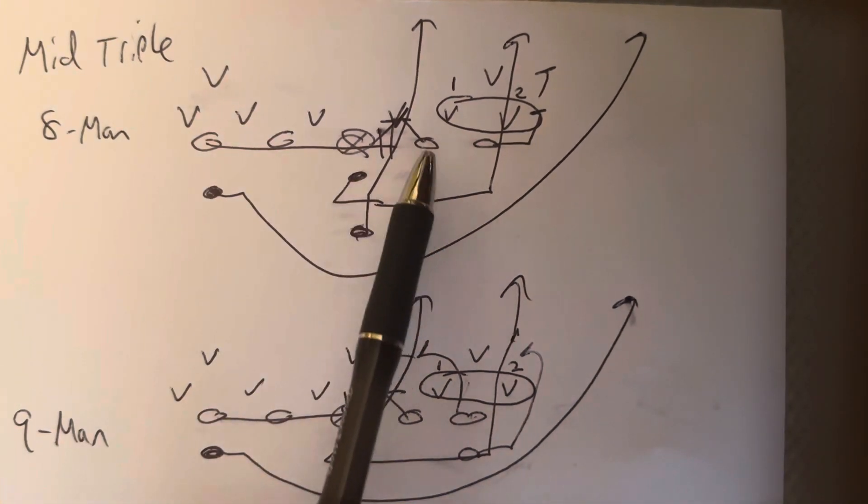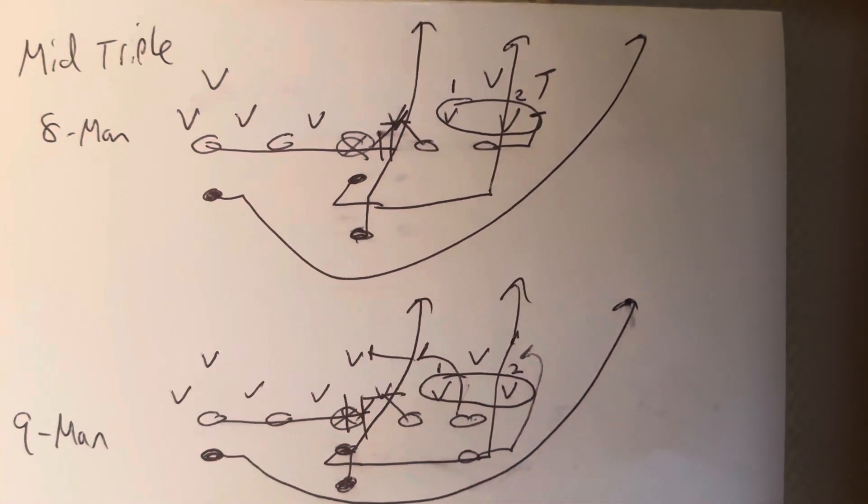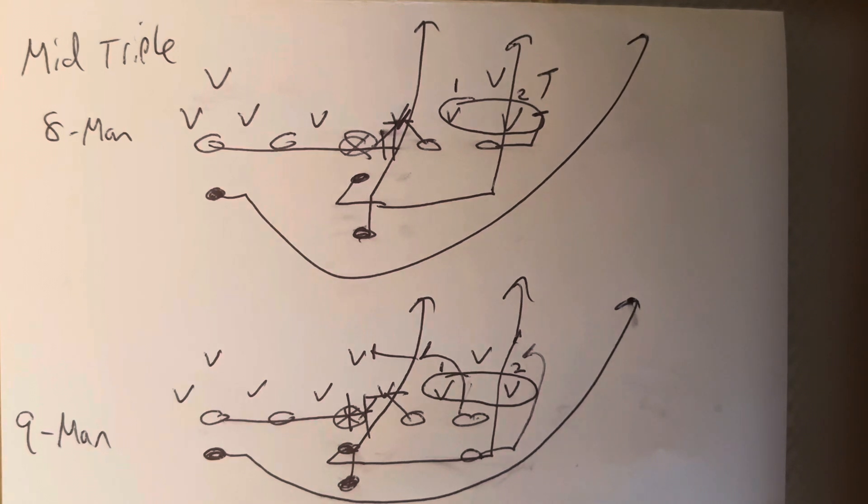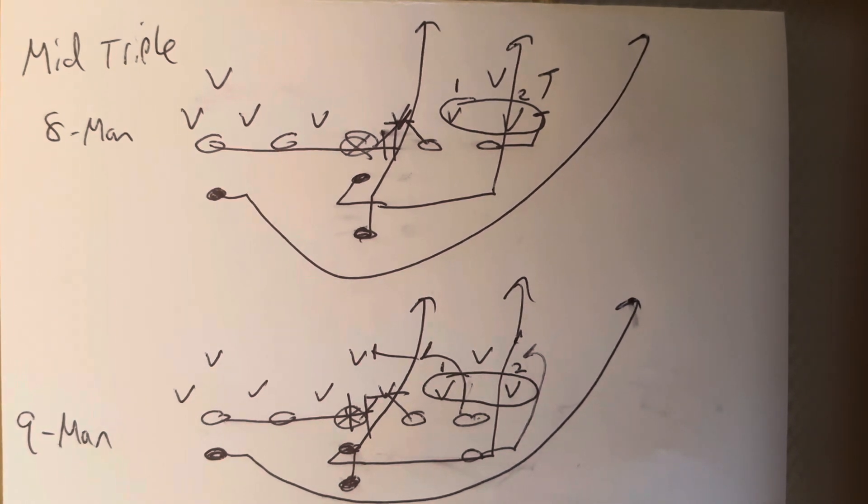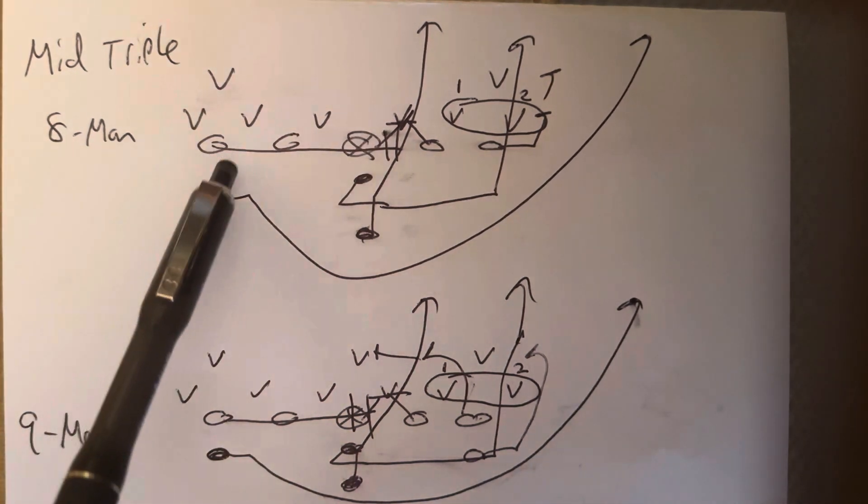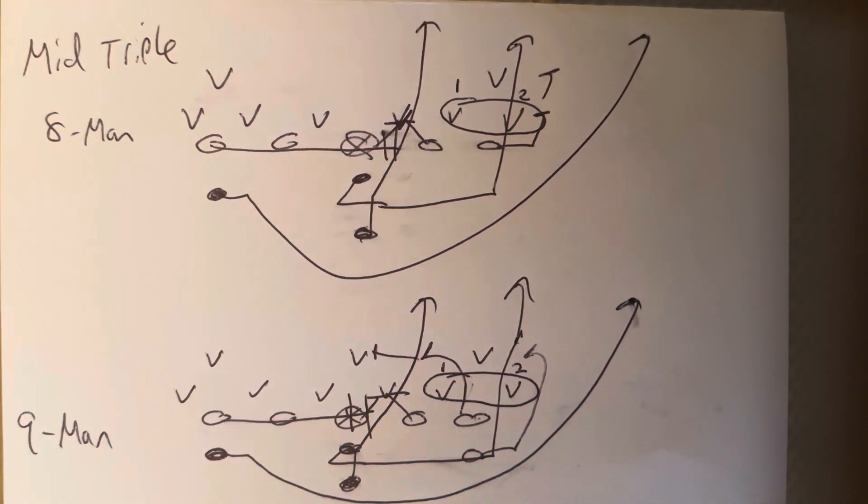The rest of it is, the center and the guard are going to ace the A-gap player. They're going to get their near knee in the crotch, near hand to the stomach, 4-inch northbound steps. Backside guard is going to block the spine of the center. Backside end is going to block the spine of the backside guard.